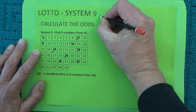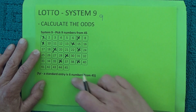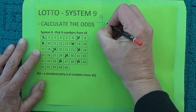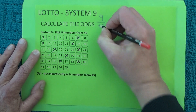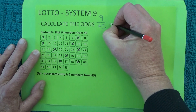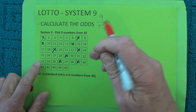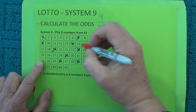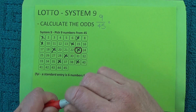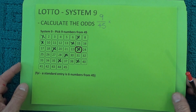You've got nine chances because you've got nine numbers marked on your coupon and there are 45 numbers in the barrel. So you've got nine chances in 45 of matching the first number that's drawn. I'll mark off one of those numbers with my red Sharpie to show that one of those numbers has actually been matched.